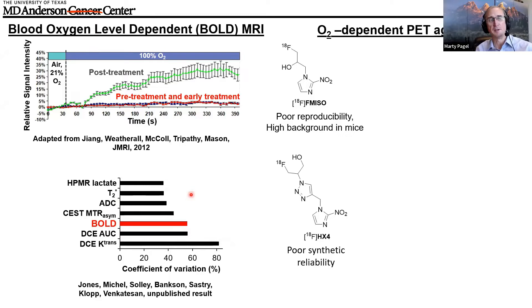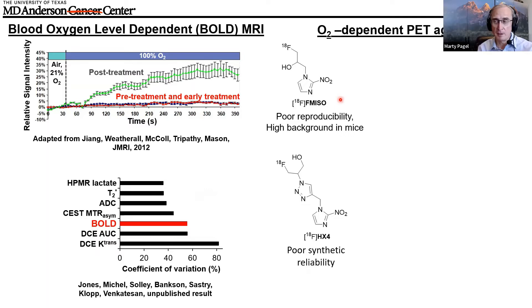Oxygen-dependent PET agents have also been developed over the years. F-MISO has a 25-year history. Dr. Halpern has compared F-MISO to EPR imaging, which I think is a great comparison, but F-MISO has shown poor reproducibility and high background signal in mice, and relatively poor reproducibility in humans as well. That's largely because of phase 2 metabolism, which is variable in humans and mice and affects F-MISO. HX4 has been challenging to make reliably in the radiochemistry lab, although that's still a work in progress.